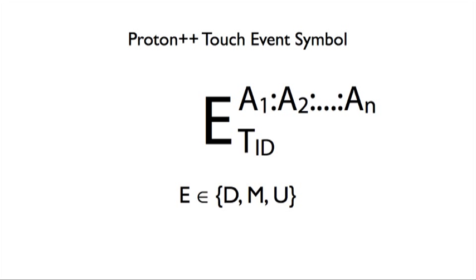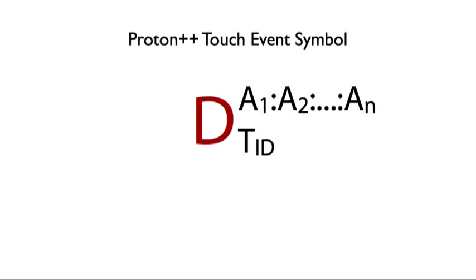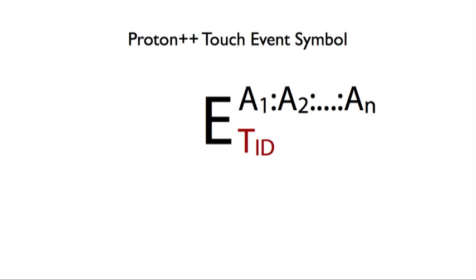A Proton++ touch event symbol is comprised of a touch action, which can correspond to pressing a finger down, moving a finger, or lifting a finger up. A touch ID, such as the first touch, the second touch, etc. And a set of custom attribute values representing touch characteristics, such as the hit target of a touch, the direction of a touch, and others.